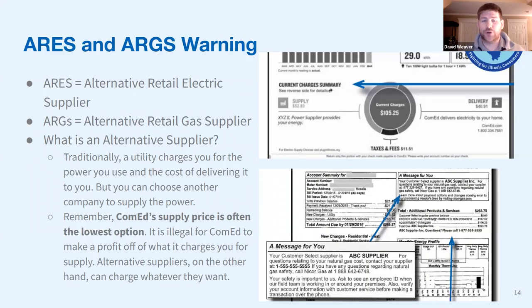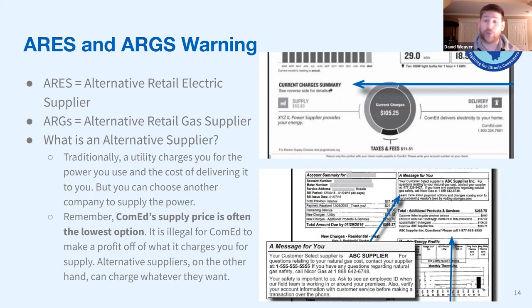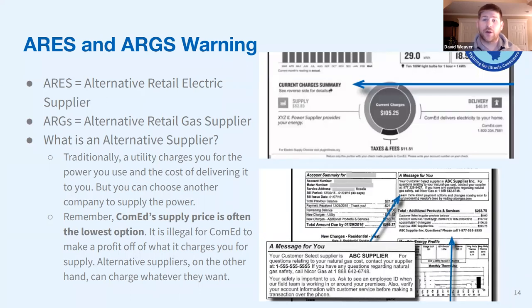So what is NOT decarbonization? Alternative retail electric and gas suppliers — they typically use very shady business practices. My own grandmother was scammed by one. On your electric bill you might see a section where it says a third-party supplier provides your energy while ComEd delivers your electricity. ComEd is not allowed to make a profit off supply, but these alternative retail suppliers are. Some defend their higher costs by claiming they'll give you a green electricity plan for an extra nickel or dime per kilowatt hour — but there's almost no oversight and no certifications to back them up.